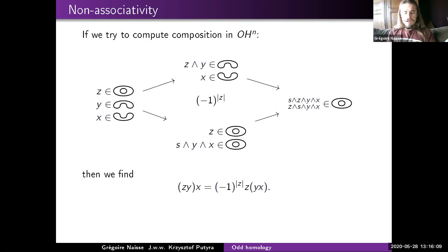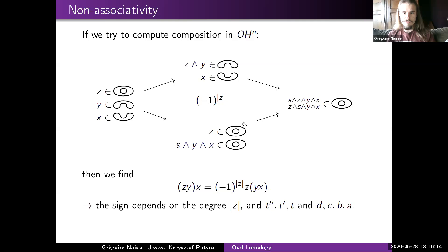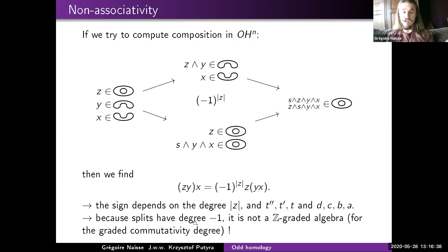This means the composition law for the odd arc algebra is not associative. The sign depends on the degree of z, the shape of the underlying tangles t-double-prime, t-prime, t, and the closures a, b, c, d. Moreover, because splits have degree minus one, they multiply on the left by a variable of degree minus one, meaning the odd arc algebra is not graded over all gradings that control commutativity.